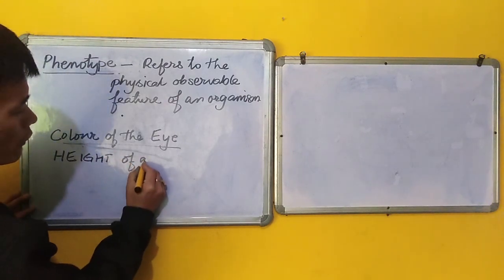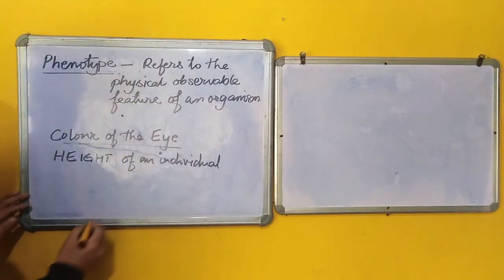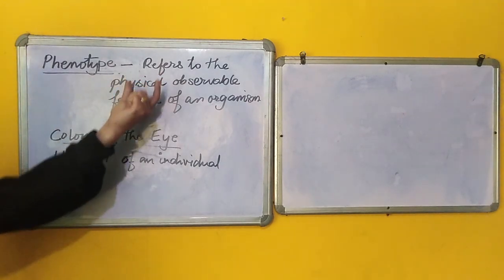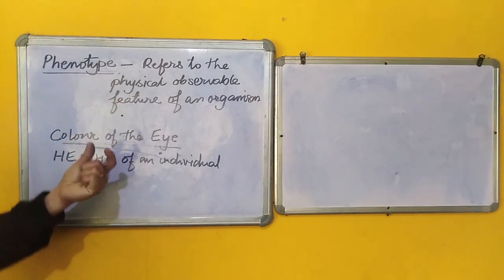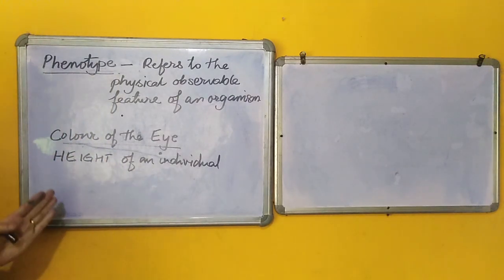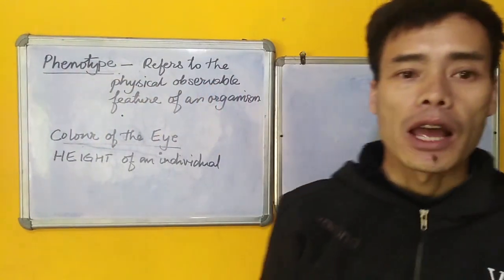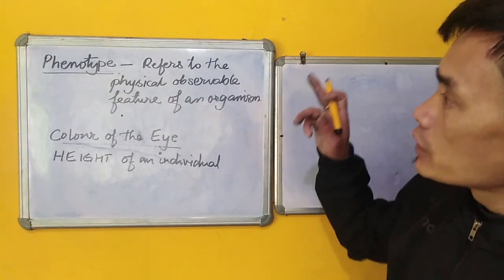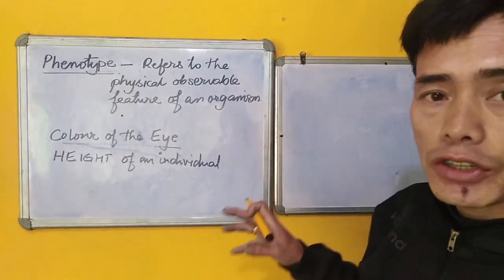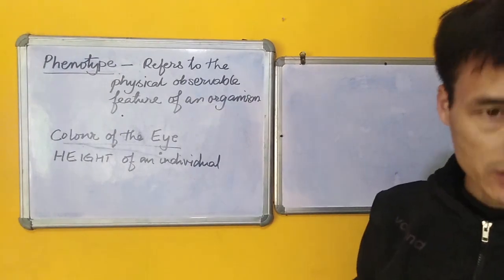Height of an individual is also an example of a phenotype. The phenotype is the physical observable feature, but at the same time, we should understand that this phenotype is actually the expression of a gene. So, my dear students, I would like to suggest you all that you should go through these terminologies and understand the terminologies before you get into the further details of genetics. Thank you.